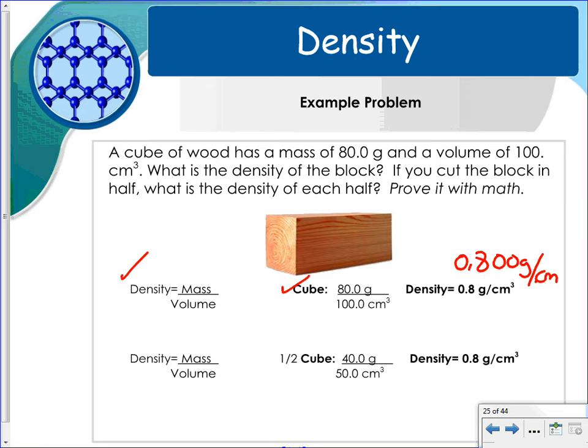Paying attention to three significant digits here and four here, so your answer should have three. Now, if you take that and you cut it in half, now you've halved your mass and you've also halved your volume, but the density is still going to be 0.8 grams per cubic centimeter. So that makes density an intensive property.